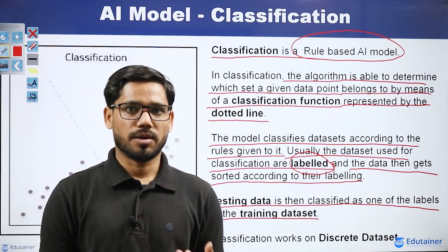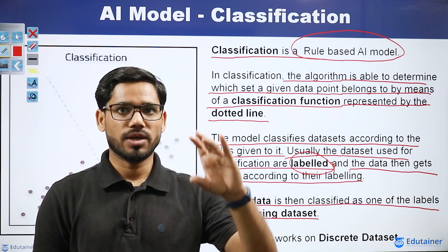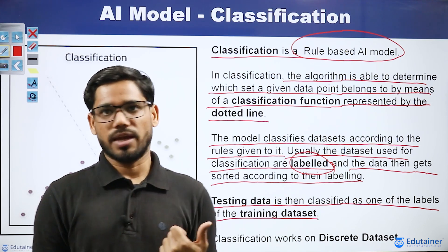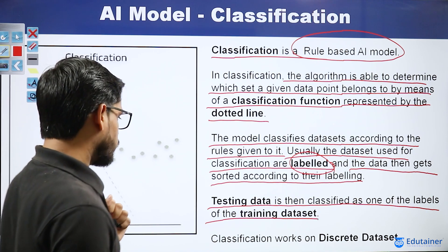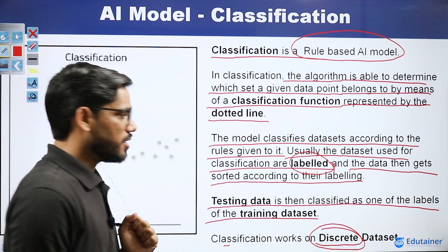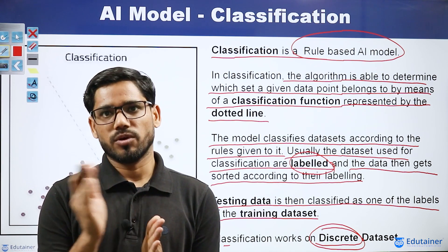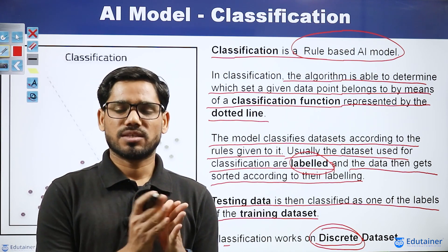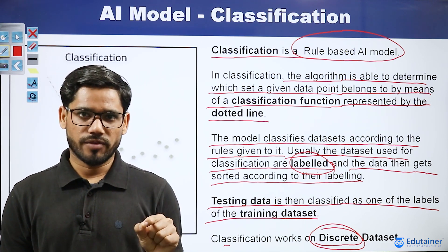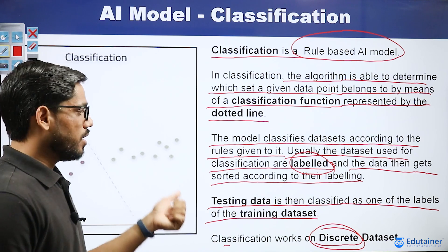For example, if you have a dog, cat, or other animal in the data, you can predict the label. The testing data is classified as dog, cat, or another animal, based on the training data. Classification works on discrete data sets — where specific whole number values are defined — unlike continuous data where every value is defined.